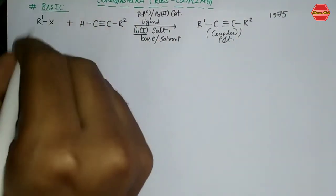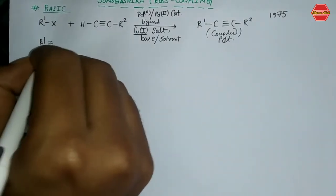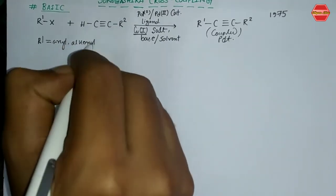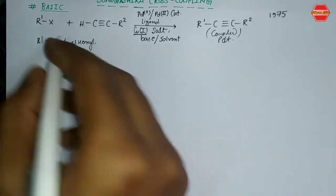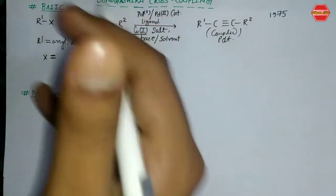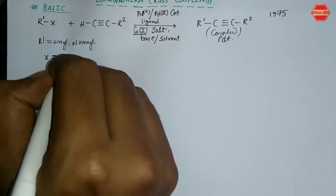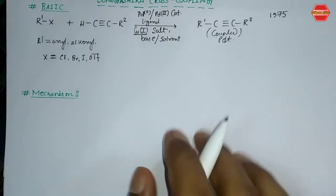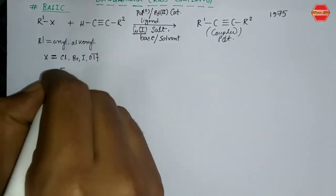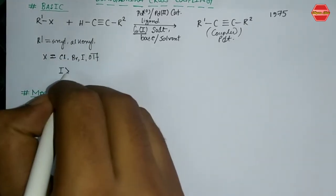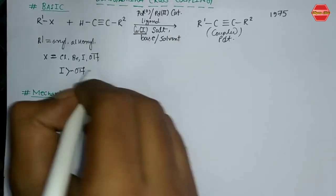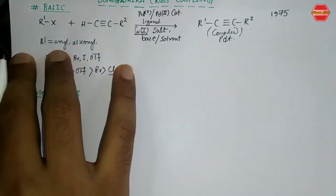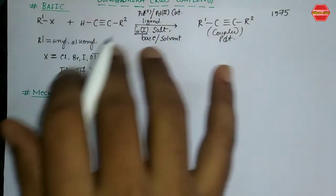The R1 group used here can be aryl, alkyl, or any kind of heteroaryl group. X is the leaving group — it can be Cl, Br, I, or OTf. The reactivity depends on the leaving group ability: iodine is most reactive, followed by OTf, then Br, and finally the least reactive is Cl.